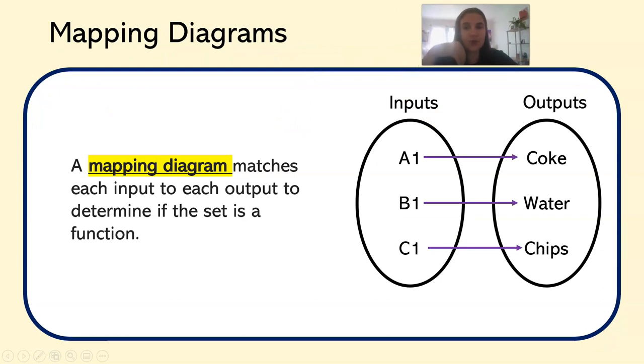And we use something called a mapping diagram to show functions. A mapping diagram matches each input to each output to determine if the set is a function. A mapping diagram has inputs on the left, outputs on the right, and then arrows show which input goes with which output. And usually ovals or rectangles show the inputs and outputs.